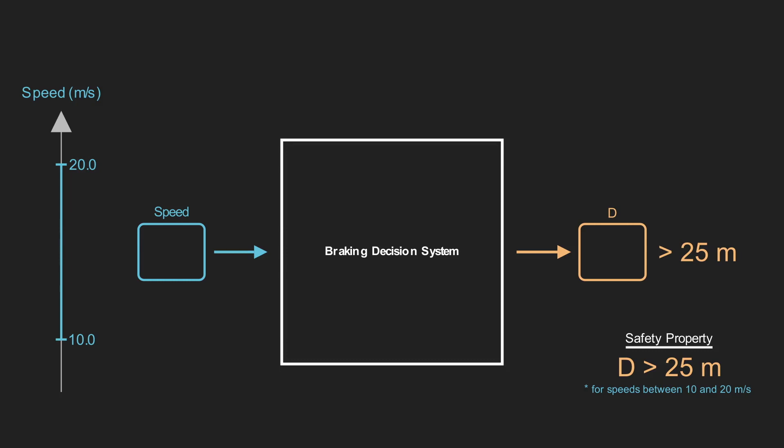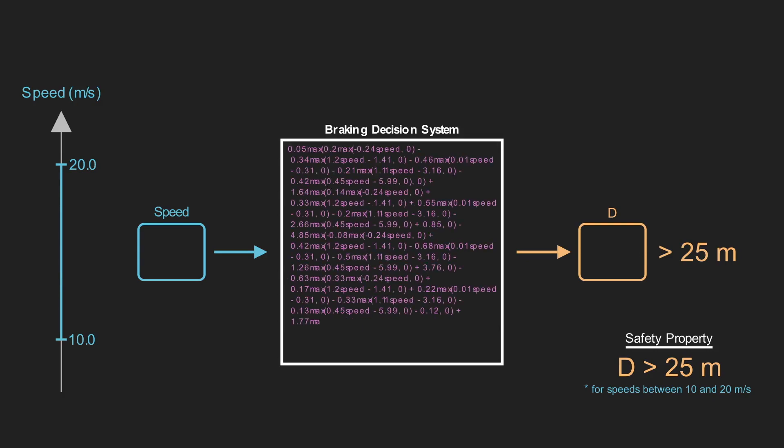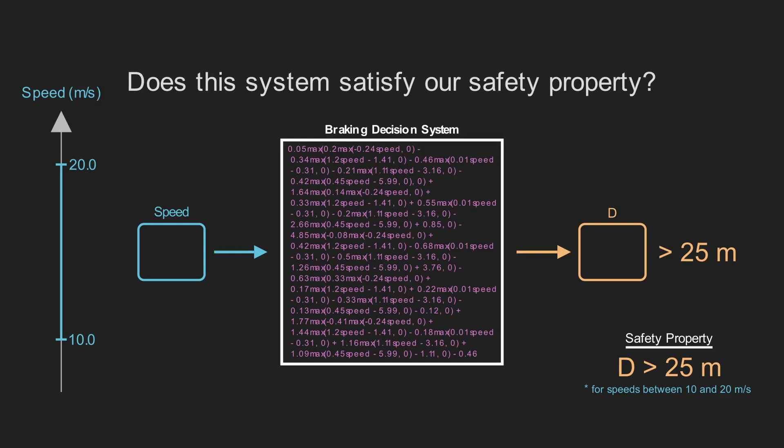Now that we are warmed up, let's get to our main goal, which is to verify a neural network. We will start with a small neural network, trained to take in a speed and output a braking distance. While we often represent neural networks pictorially, as shown here, they're really just mathematical formulas, like those in the last example we saw. Here's the mathematical formula that this small neural network represents. So what do you think? Does this neural network braking system satisfy our safety property? Feel free to pause the video again to think about it.